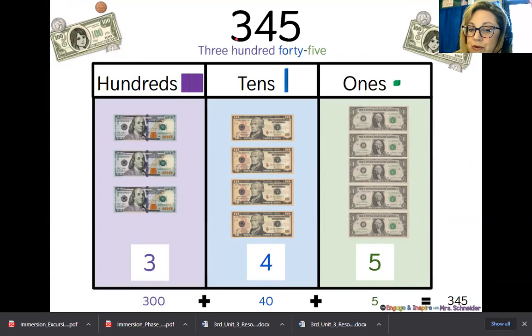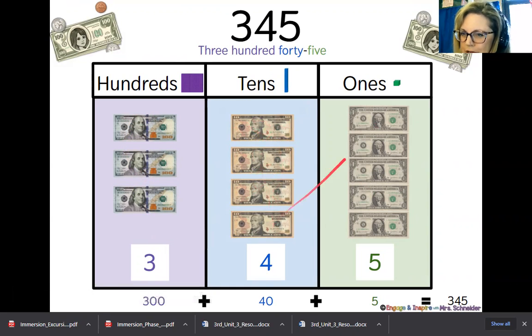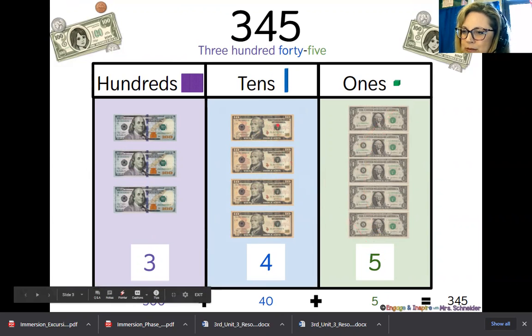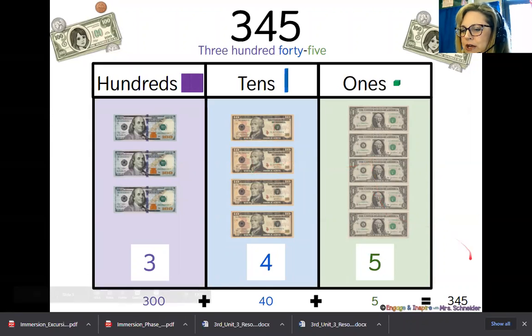So here's another way to show 345 using money. Sometimes that's a little easier. So if you think of it as three $100 bills and four $10 bills, that's 40, and five $1 bills, it's similar to just like we did with the base 10 blocks. So we have 300 plus 40 plus 5 equals 345.